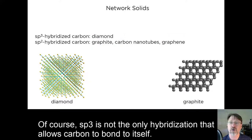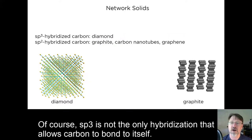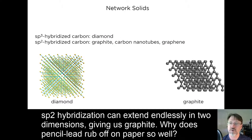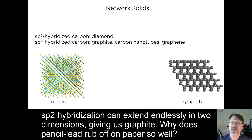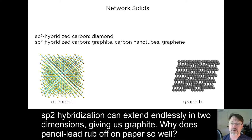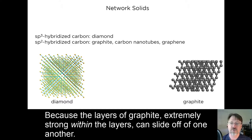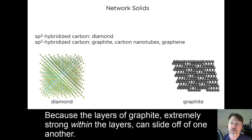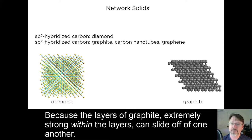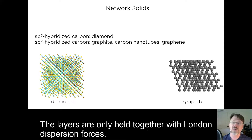Of course, sp3 is not the only hybridization that allows carbon to bond to itself. Sp2 hybridization can extend endlessly in two dimensions, giving us graphite. Why does pencil lead rub off on paper so well? Because the layers of graphite, extremely strong within the layers, can slide off of one another. The layers are only held together with London dispersion forces.